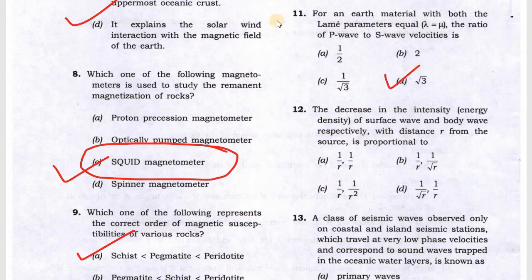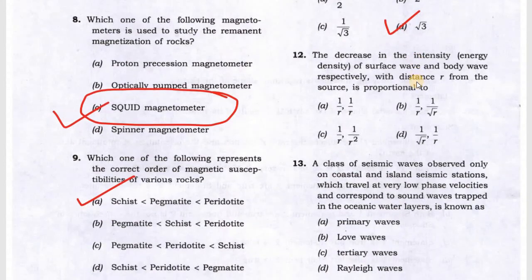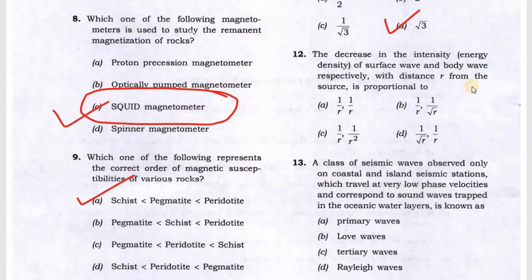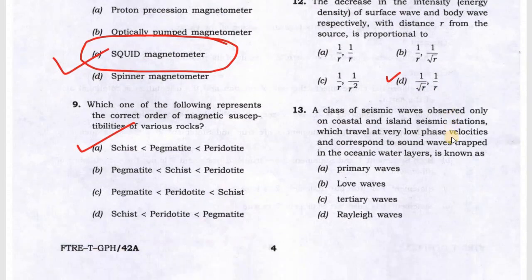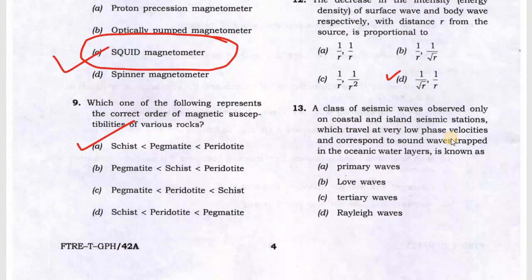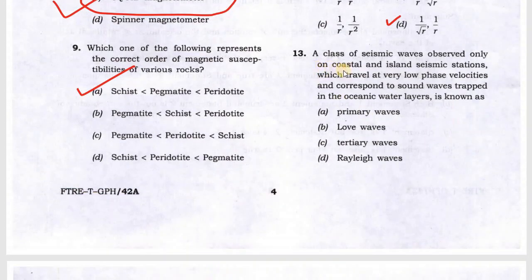Next is for an earth material with both Lame parameters constant, then it will be Vp by Vs equal to root 3. Next they are asking what is the intensity of energy of surface wave and body wave respectively. Surface wave and body wave energy will decrease. This is option D: surface wave decreases faster than the body wave. Next question is a very difficult question to solve in an exam.